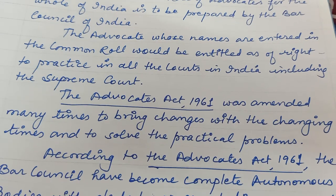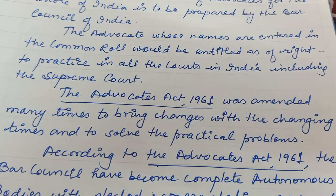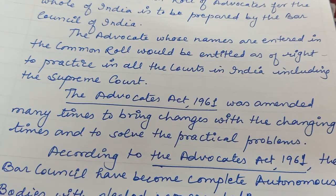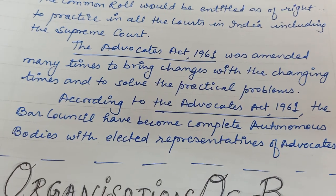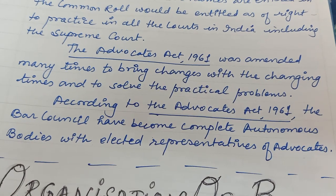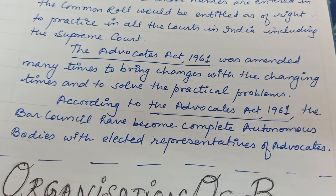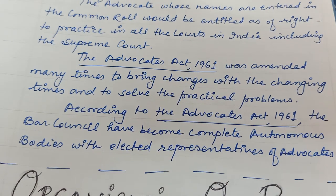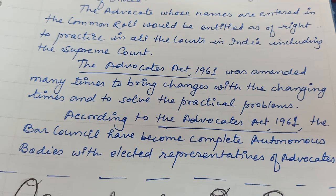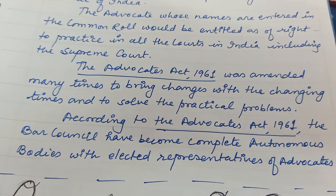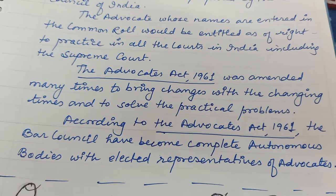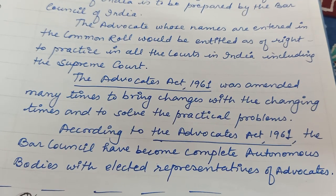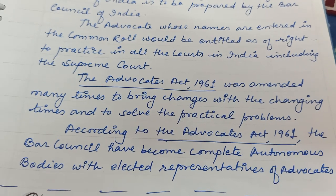The advocates whose names are entered in the common roll would be entitled to the right to practice in all courts in India, including the Supreme Court. The Advocates Act has been amended many times to bring changes with the changing times and to solve practical problems. According to the Advocates Act 1961, bar councils have become complete autonomous bodies with elected representatives of advocates — state bar council se elected representatives ko Bar Council of India ka member nominate karke banaya jaata hai.